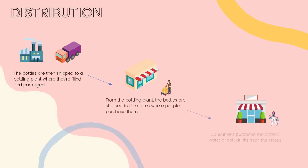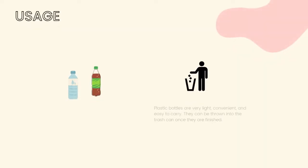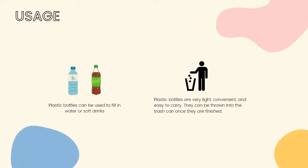After manufacturing of the bottles comes distribution. The bottles are shipped to a bottling plant where they are filled and packaged. From the bottling plant, the bottles are shipped to the stores where you purchase them. Consumers purchase the bottled water or soft drinks from the stores. For usage, plastic bottles can be used to fill in water or soft drinks. Plastic bottles are very light, convenient, and easy to carry. They can be thrown into the trash can once they are finished.